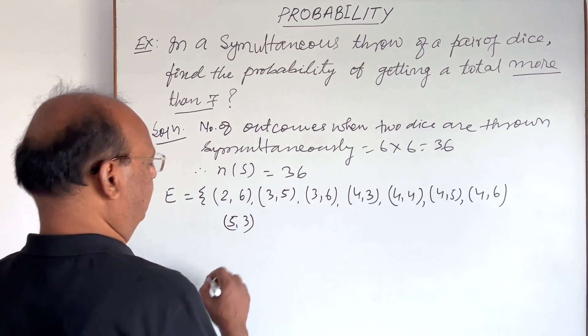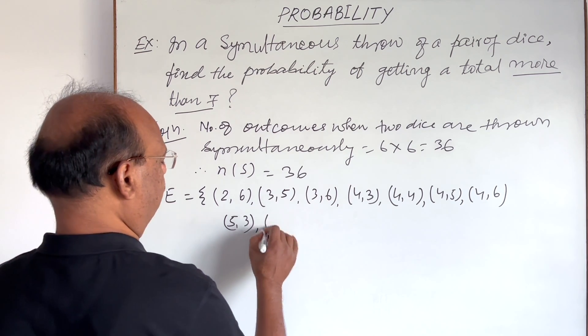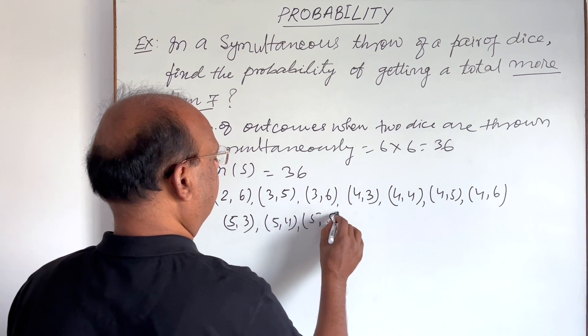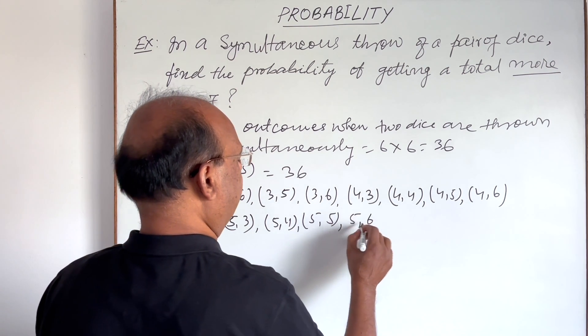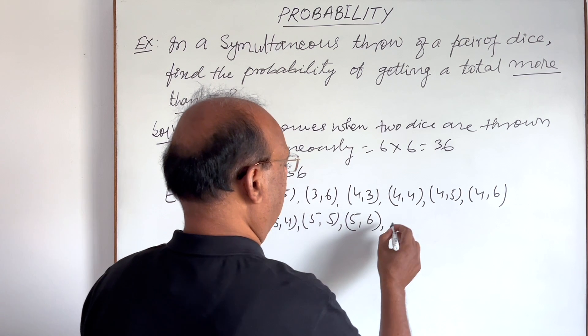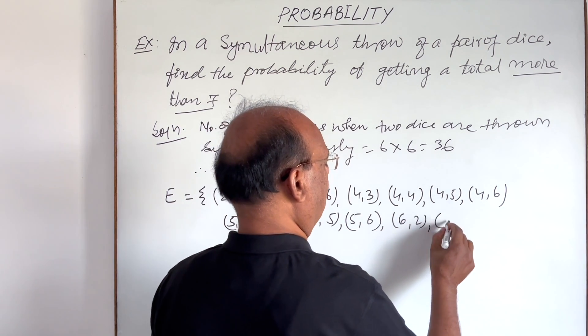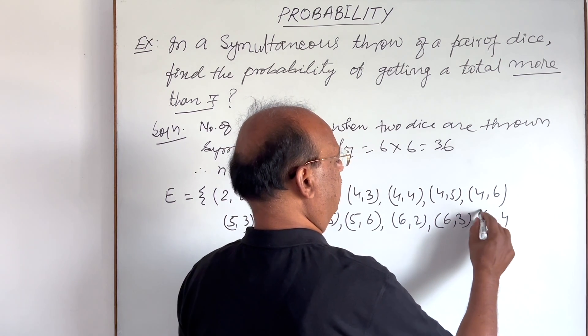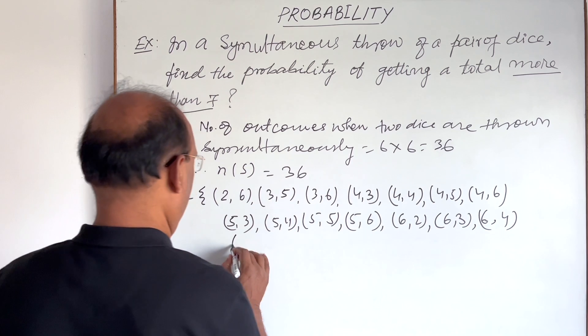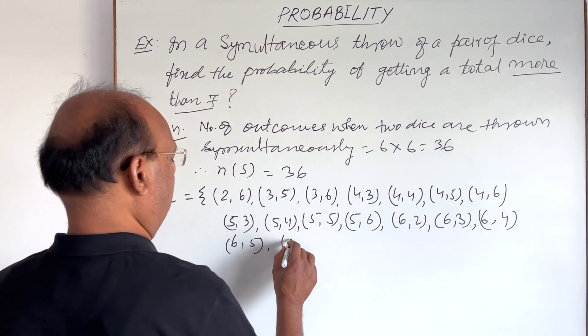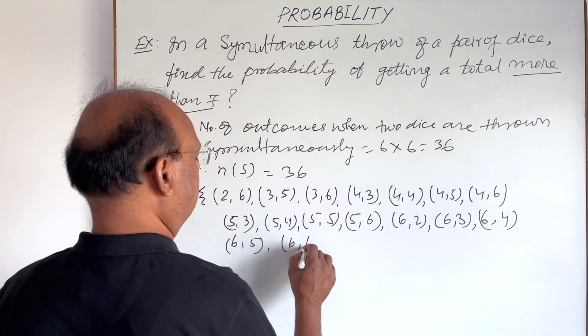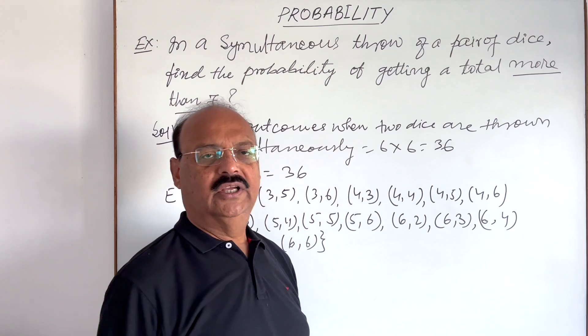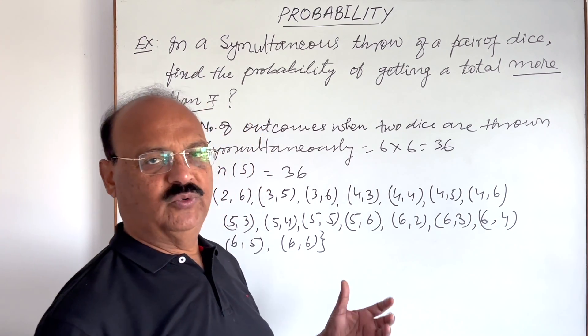Five and three, five and four, five and five, five and six, six and two, six and three, six and four, six and five, and six and six. These are the possible outcomes from the two dices when sum of numbers should be more than seven.